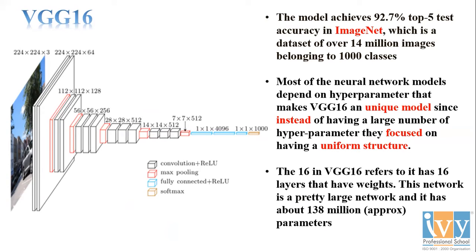VGG16 has achieved 92.7% top-five test accuracy on the ImageNet dataset. ImageNet consists of around 14 million images belonging to over 1,000 classes. Imagine the computational accuracy required to successfully classify 14 million images across 1,000 classes — achieving 92.7% accuracy on that is quite commendable.